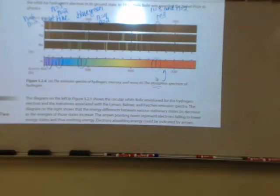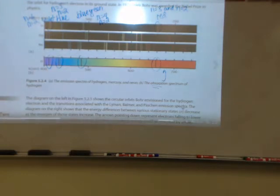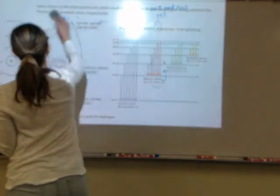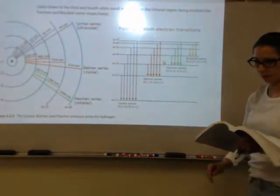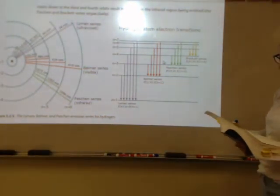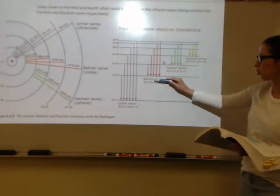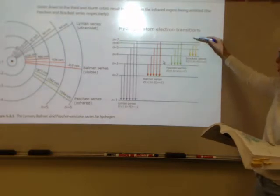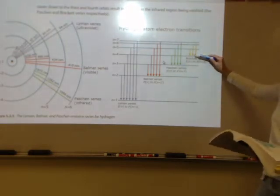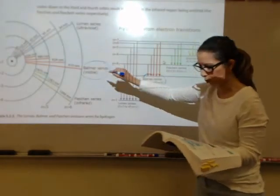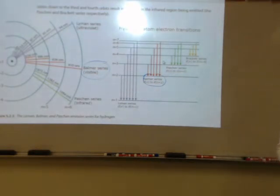Some of the bright lines in the visible spectrum have specific names. When electrons come down to the N equals one level, these are called the Lyman series; down to N equals two is the Balmer series; down to N equals three is the Paschen series; and down to N equals four is the Brackett series. The Balmer series falls within the visible region, so any electron dropping down to N equals two appears in the visible region.